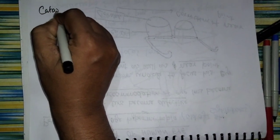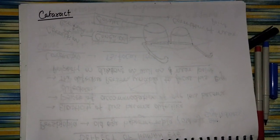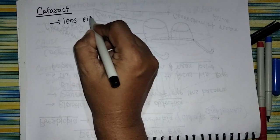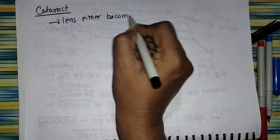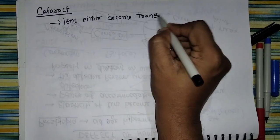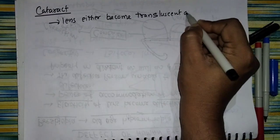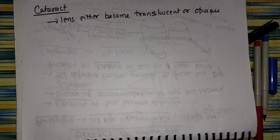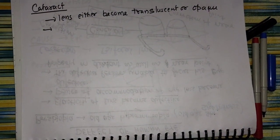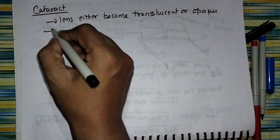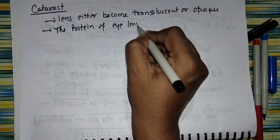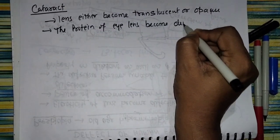Now let's talk about cataracts. What is cataract? In cataract, the lens either becomes translucent or opaque. Why does this happen? Actually, the crystalline lens, which is made of protein, undergoes denaturation. The protein of the eye lens becomes denatured.